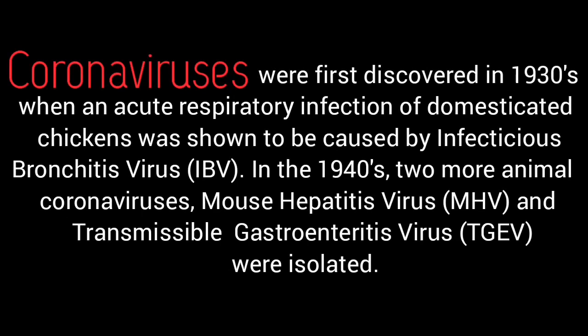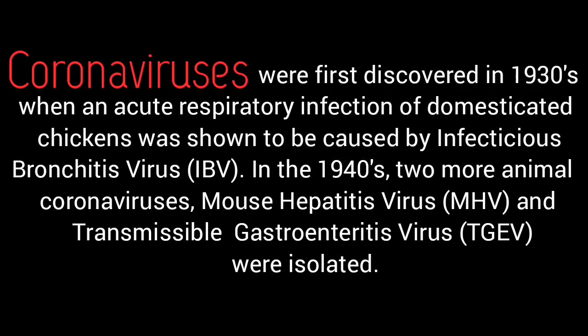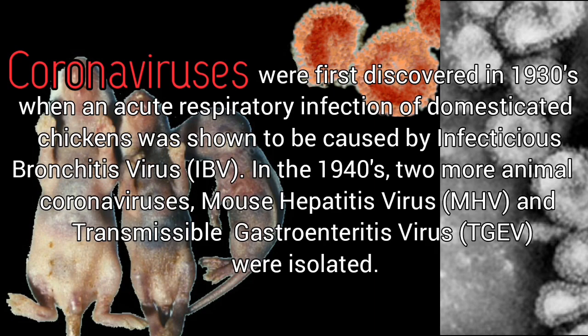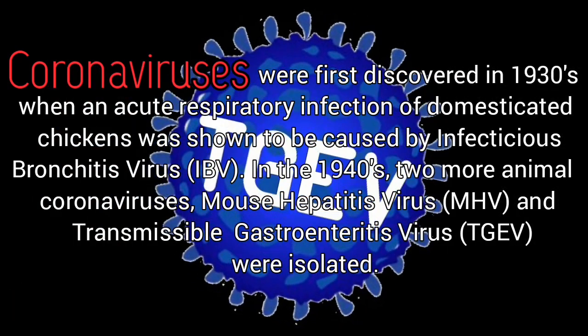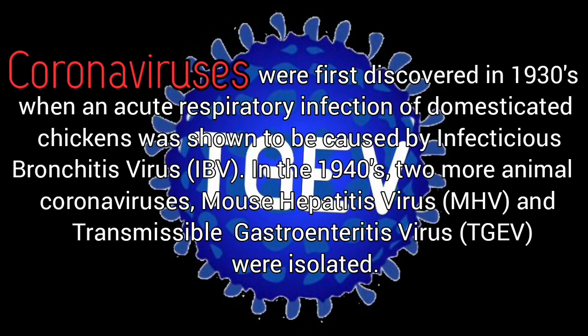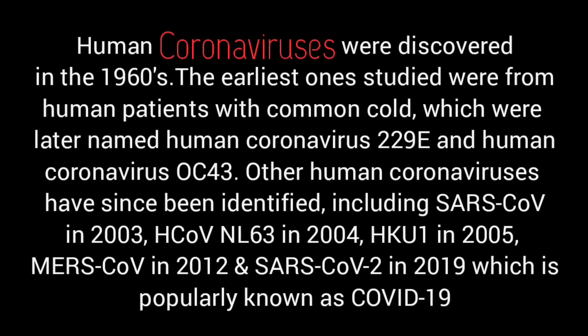Coronaviruses were first discovered in the 1930s when an acute respiratory infection of domesticated chickens was shown to be caused by infectious bronchitis virus (IBV). In the 1940s, two more animal coronaviruses — mouse hepatitis virus (MHV) and transmissible gastroenteritis virus (TGEV) — were isolated. Human coronaviruses were discovered in the 1960s.